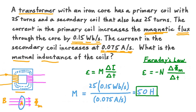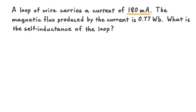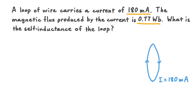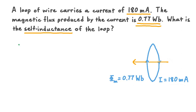Let's look at a second example exercise. A loop of wire carries a current of 180 milliamperes. The magnetic flux produced by the current is 0.77 Webers. What is the self-inductance of the loop? We have a loop of wire carrying a current of 180 milliamperes. Because of this, a magnetic field is produced that passes through the loop, and because we have this field passing through the interior area of the loop, that means we have a magnetic flux through the loop — 0.77 Webers, which we refer to symbolically as phi sub m.